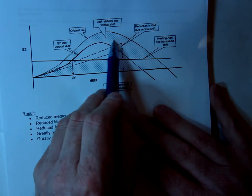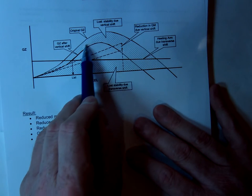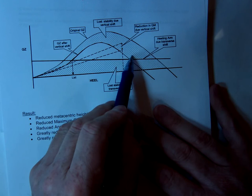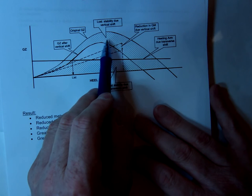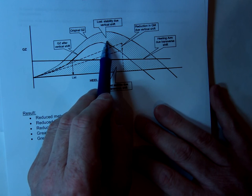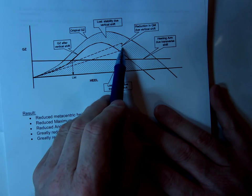So all this in here, all this value, all these dots in this area here, they are lost stability due to the vertical shift of the centre of gravity. In other words, the reduction in the GM.